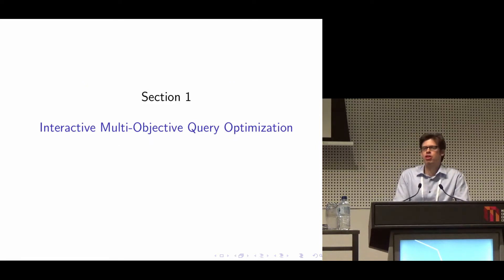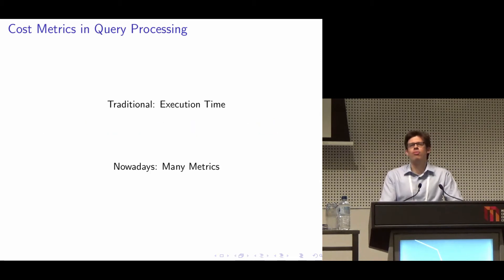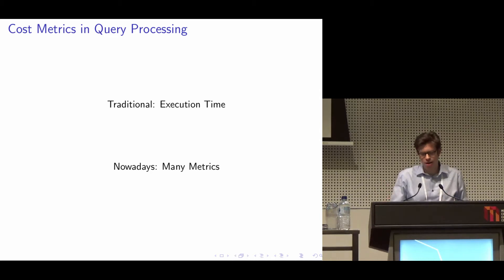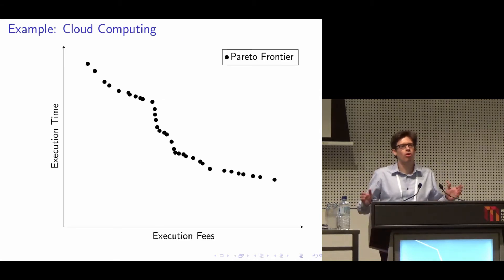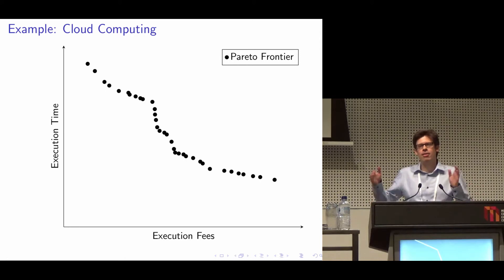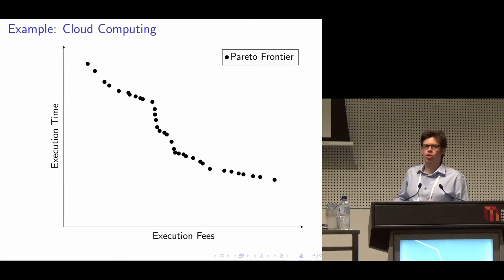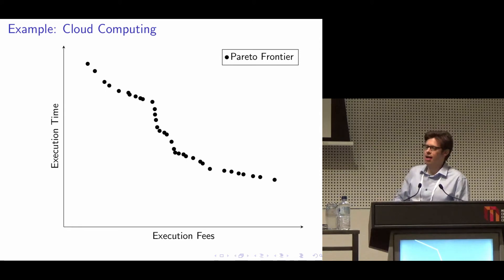Let's talk about multi-objective query optimization first. Traditionally, you care about one cost metric in query processing, which is execution time. But nowadays, you have many scenarios in which you actually care about multiple cost metrics, and you have the choice to trade between them. Consider, for instance, cloud computing: you can often trade execution time against monetary fees, because if you rent more resources from the cloud provider, you may reduce execution time. And the set of optimal cost trade-offs for a given query, also called the Pareto frontier, might look somewhat like shown here.